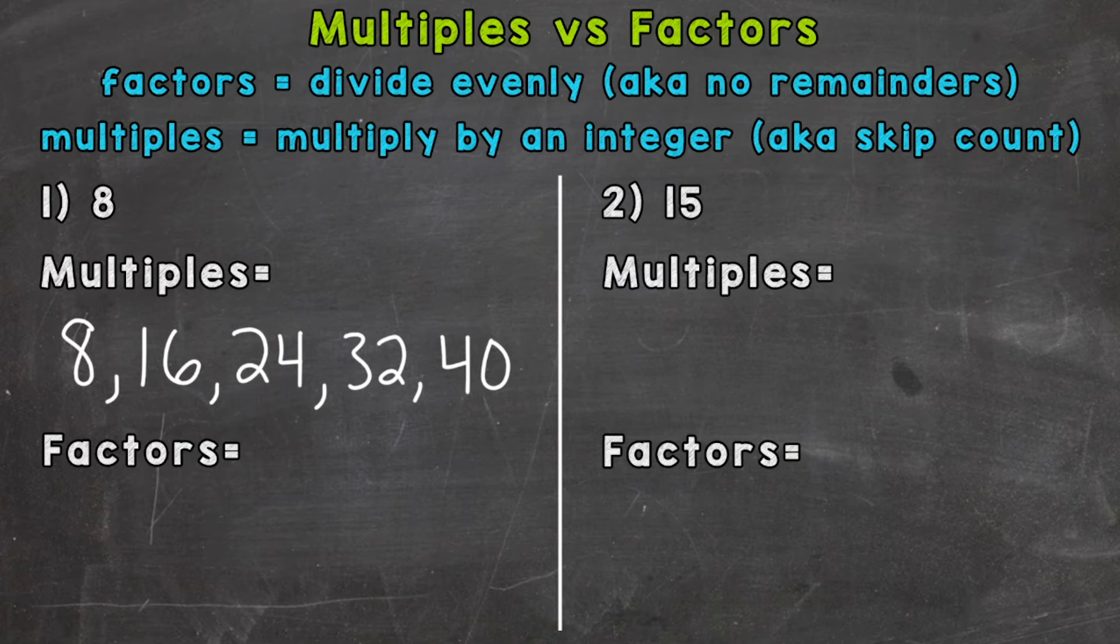So let's move on to factors and factors are all of the numbers that the given number can be divided by evenly. So no remainders, or you can think of factors as the numbers that can be multiplied in order to get that given number. Factors are numbers that are multiplied to get a product.